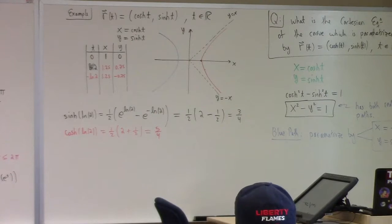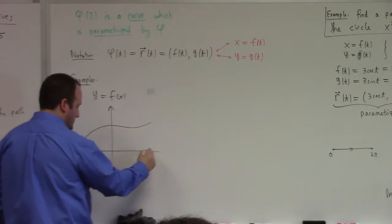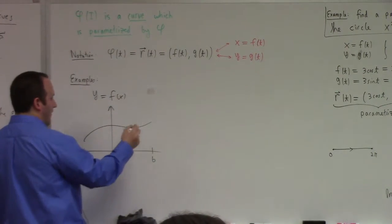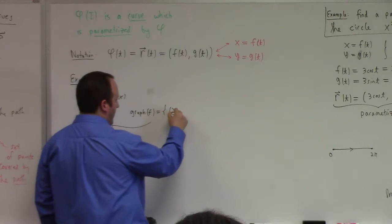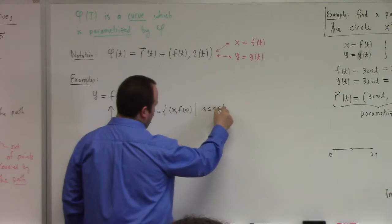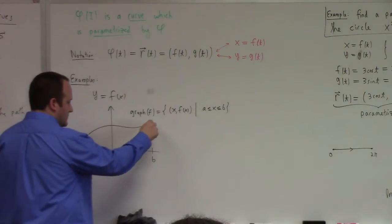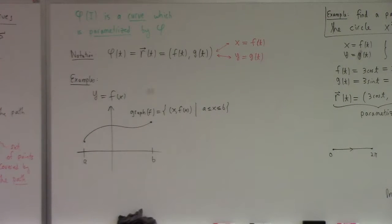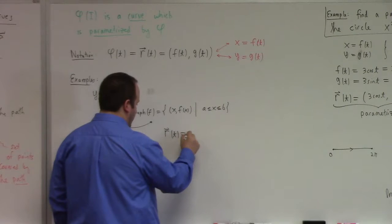Here, y equals f of x. That's some curve. Here's its graph. So the graph of f is what? It's the point set x comma f of x, in my case, such that a is less than or equal to x is less than or equal to b. That's a graph.